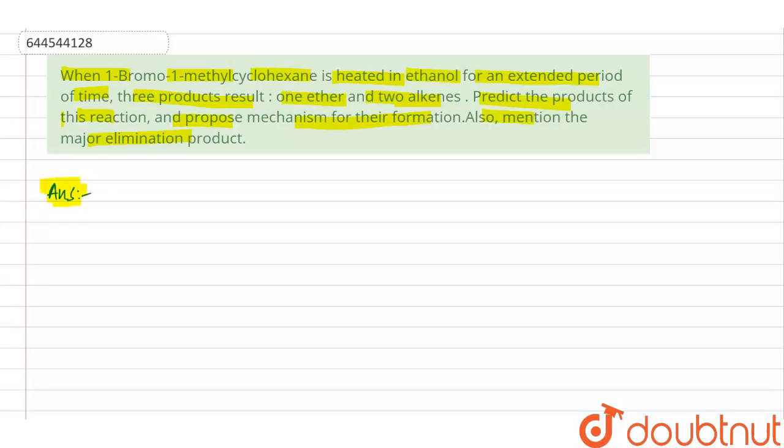So the starting material is 1-bromo-1-methylcyclohexane: one bromo, one methyl, cyclohexane.